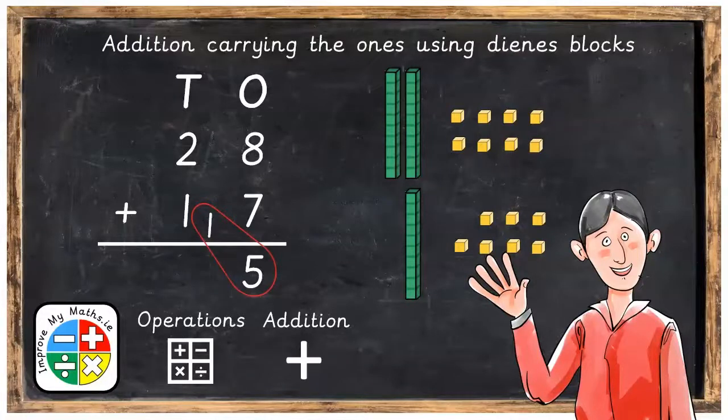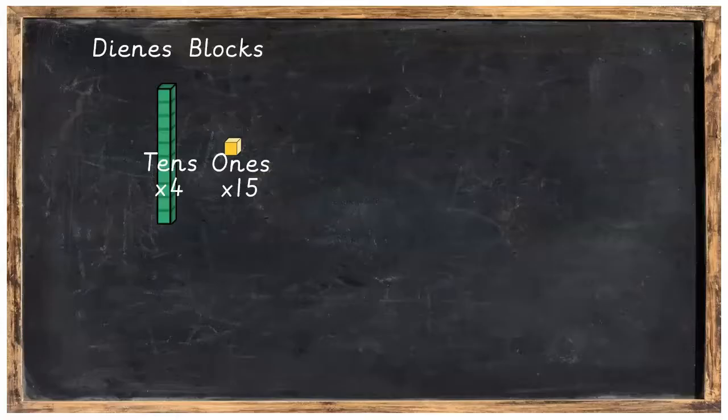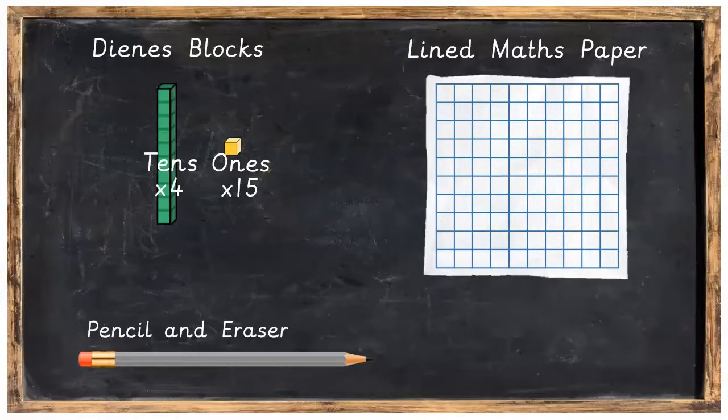Hi everyone, in this lesson we're going to be doing some addition, carrying the ones using Dienes Blocks. Before we get started, you're going to need some Dienes Blocks: 4 tens, 15 ones, some lined math paper, and a pencil and eraser.